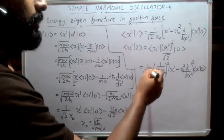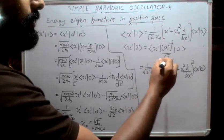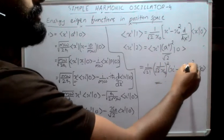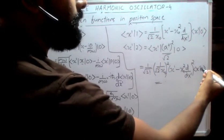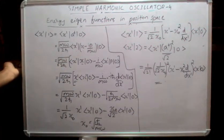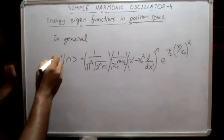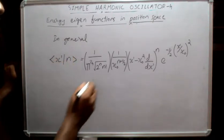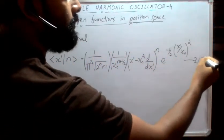We get ⟨x'|2⟩ = 1 over root 2 times 1 over root 2 x₀ whole square times (x' - x₀² d/dx')² acting on ⟨x'|0⟩. In general we can write the energy eigenfunction as ⟨x'|n⟩ in this way — equation 21.